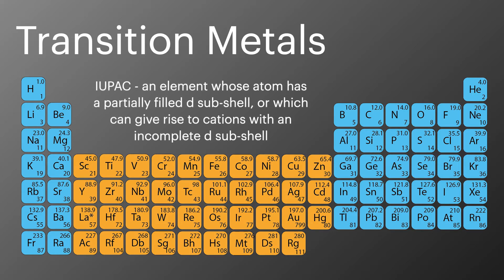Now, not all elements in that middle block are transition metals. The IUPAC defines transition metals as an element whose atom has a partially filled D subshell or which can give rise to cations with an incomplete D subshell. So you need to have a partially filled D subshell as either the atom or the cation to qualify as a transition metal.